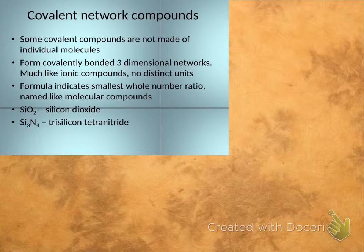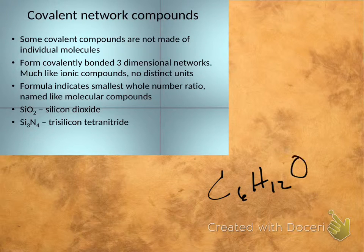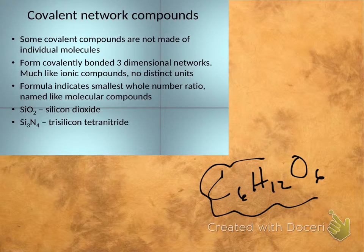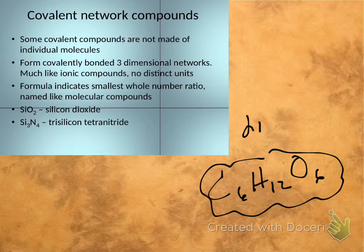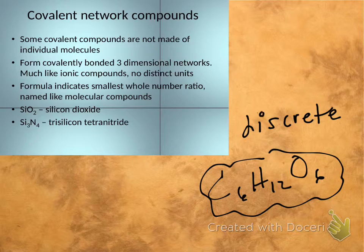When we look at C6H12O6, we can actually isolate a piece of matter that is six carbon atoms, twelve hydrogen atoms, and six oxygen atoms, and it's a distinct unit. The term discrete is often used to describe something that sort of stands alone. So it's discrete, it's distinct, it's a unit.